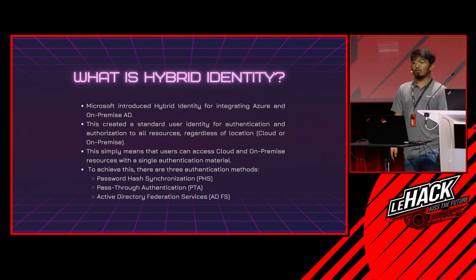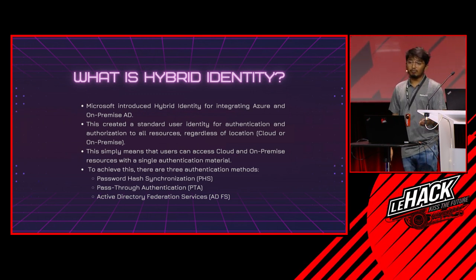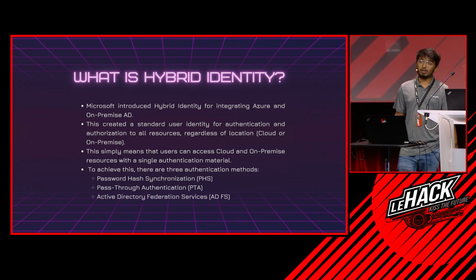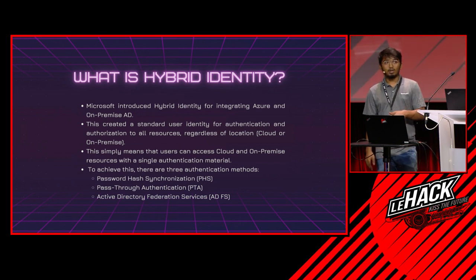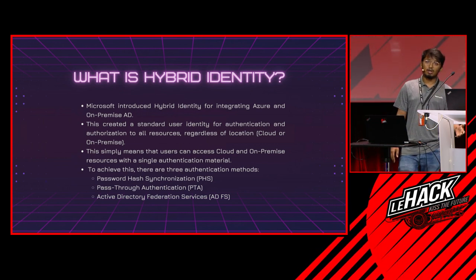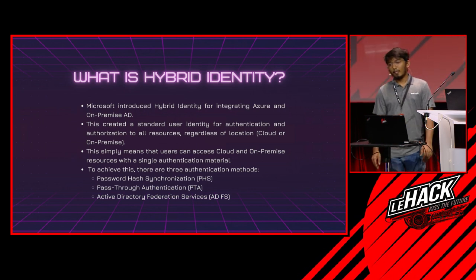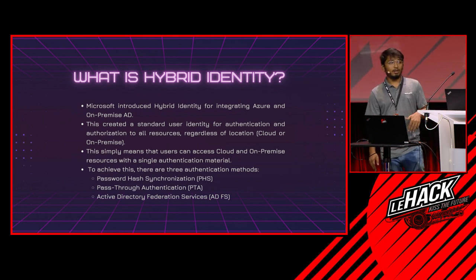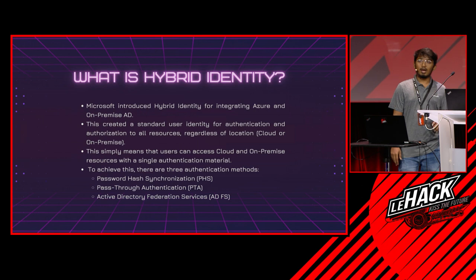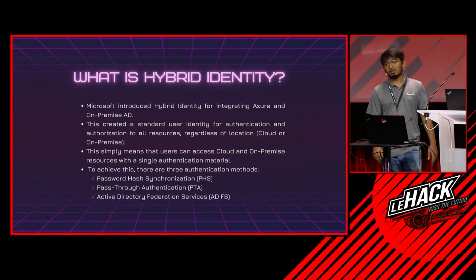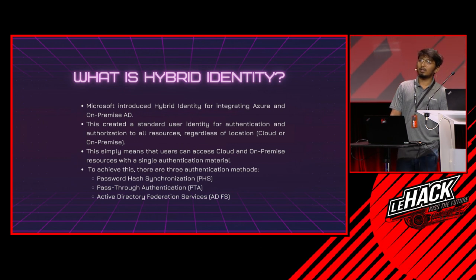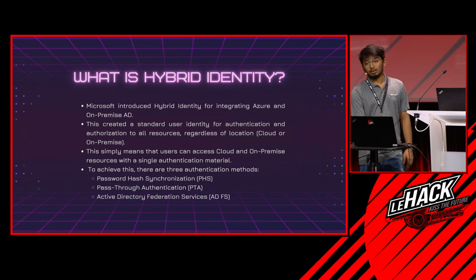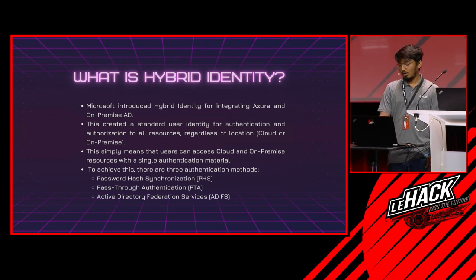Microsoft introduced hybrid identity for integrating Azure AD with on-premises AD. This creates a standard user identity for authentication and authorization to all resources regardless of location — whether accessing resources on-premises or in Azure AD. Users can eliminate multiple authentication materials and use a single credential to access all resources. To achieve this there are three authentication methods: password hash synchronization, pass-through authentication, and Active Directory Federated Services.